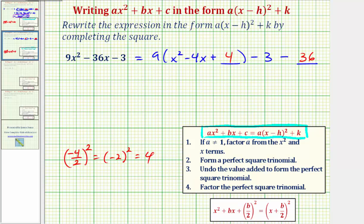And then finally, step four, we factor the perfect square trinomial, which is the trinomial here inside the parentheses. Now because we know this is a perfect square trinomial, it is going to factor into the quantity x plus b divided by two squared.